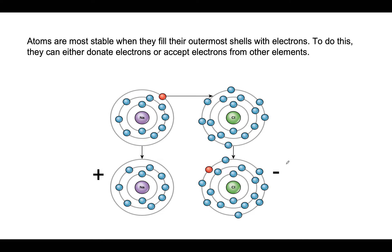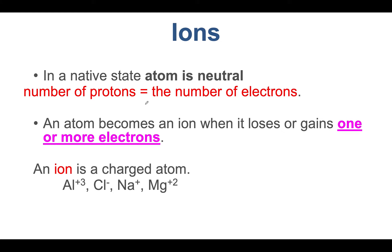Again, in a native state an atom is neutral. In an uncharged atom, the number of protons equals the number of electrons. But an atom becomes an ion when it either loses or gains an electron.